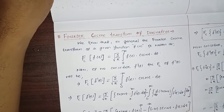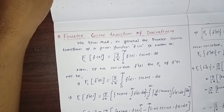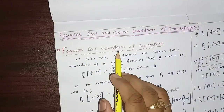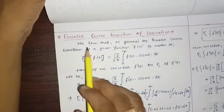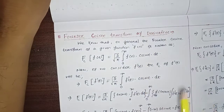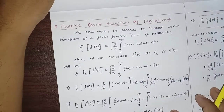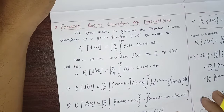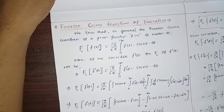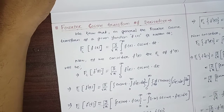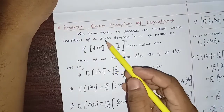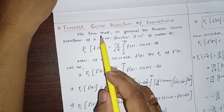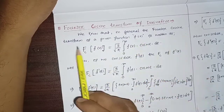These two things will be required at that time. That means the expressions whatever we found from Fourier Sine Transform of derivatives and Fourier Cosine Transform of derivatives, whatever we are going to discuss today, will be useful whenever we are going to discuss the application part of Fourier cosine and sine transform. So let's start today's derivation.